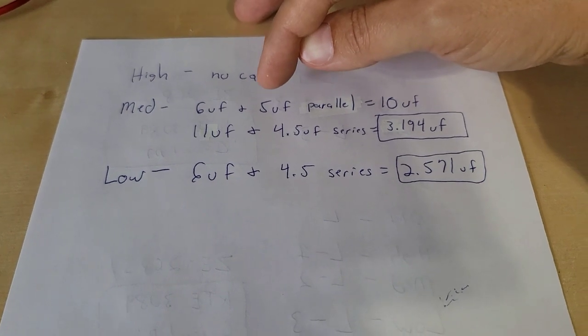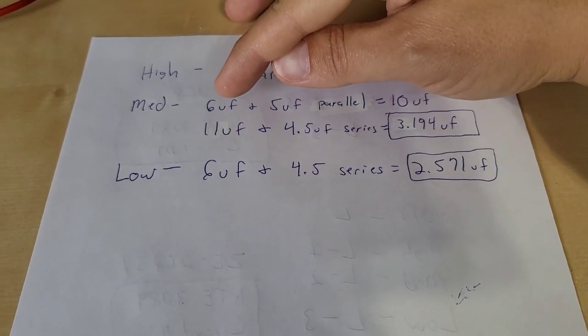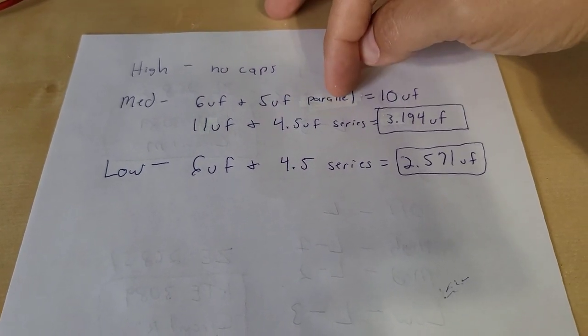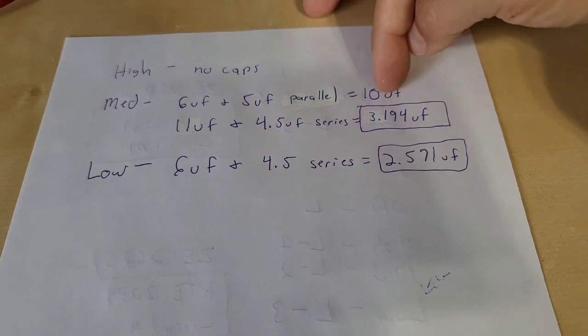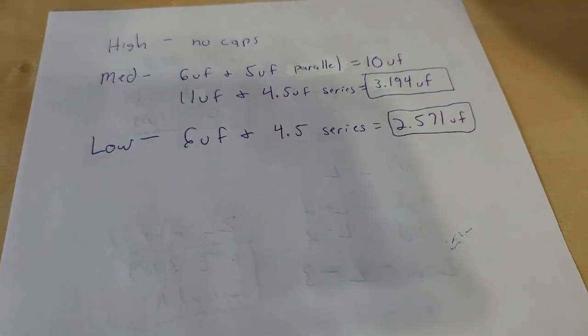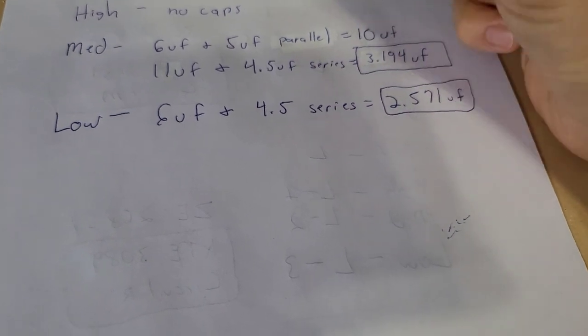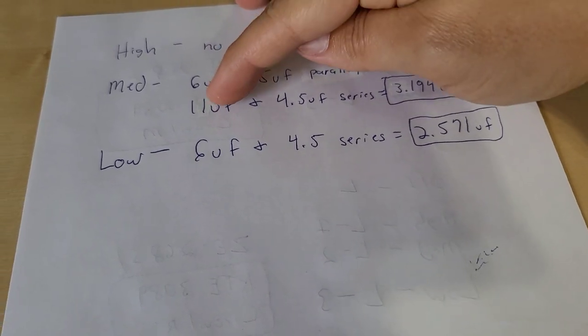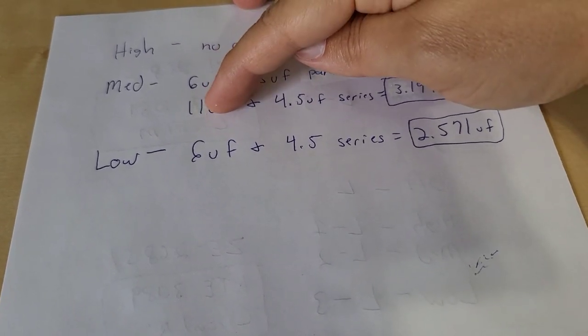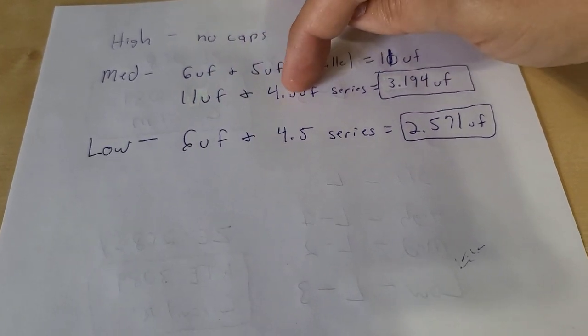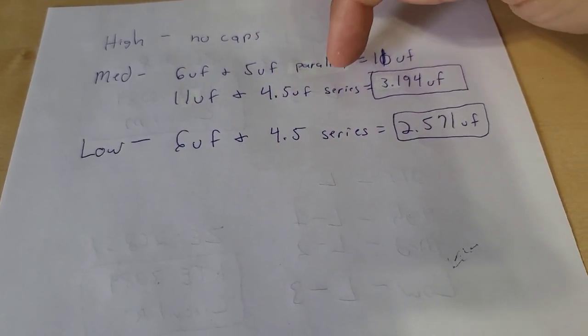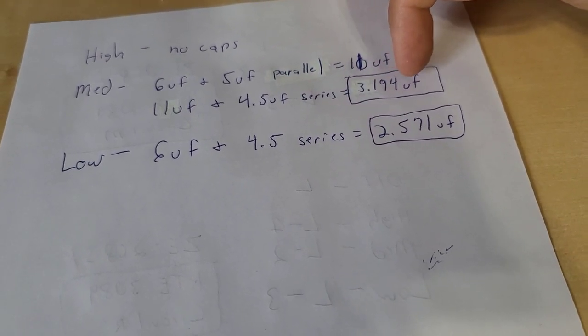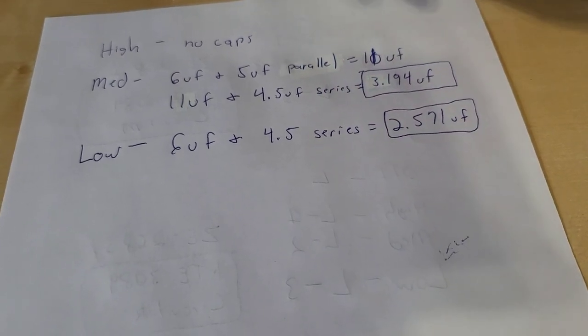Medium is probably the most complex. So it takes the six microfarads, so the yellow and the purple, and it connects those two capacitors in parallel. That'll give me actually 11 microfarads. So then what it'll do next is that it'll take those two capacitors in parallel and then take those two capacitors and then put it in series with the gray wire which is the four and a half microfarads and it gives me a total microfarad of 3.194 and there's your medium speed and it will slow down the fan.